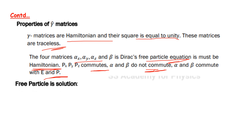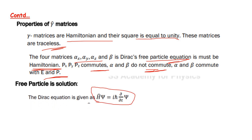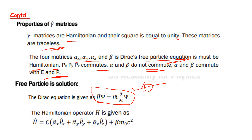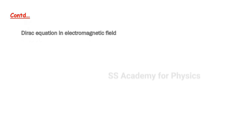The free particle solution of the Dirac equation is given by: H psi = i h-cross dou-psi by dou-t. The Hamiltonian operator H is given as: H = c times (alpha-x px + alpha-y py + alpha-z pz) + beta m-naught c squared. This is the Dirac Hamiltonian operator, which is very important.